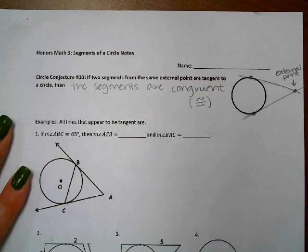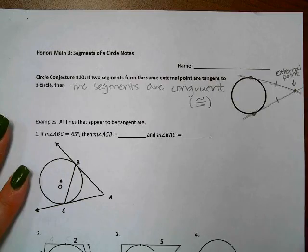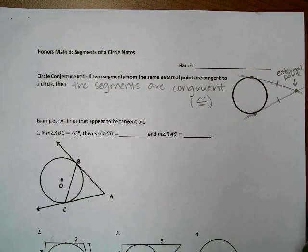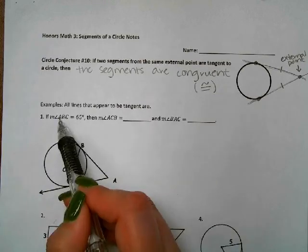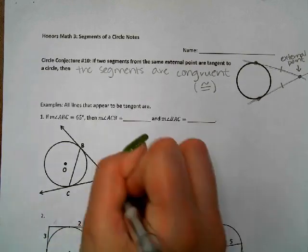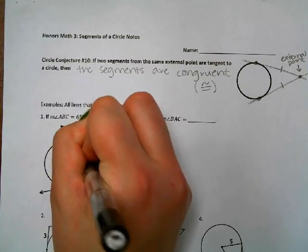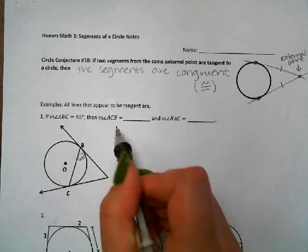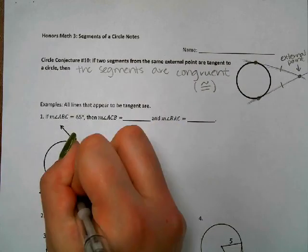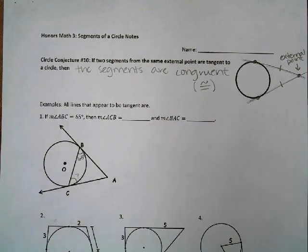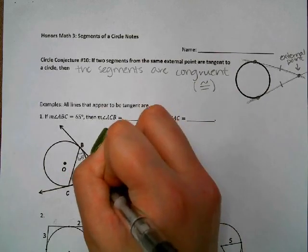What circle conjecture 10 is saying is that these two segments are the same length — they're equivalent in length. So for example, if you have the measure of angle ABC — the angle from A to B to C — and this angle is 65 degrees, then the measure of angle ACB and the measure of angle BAC are what we're trying to find.